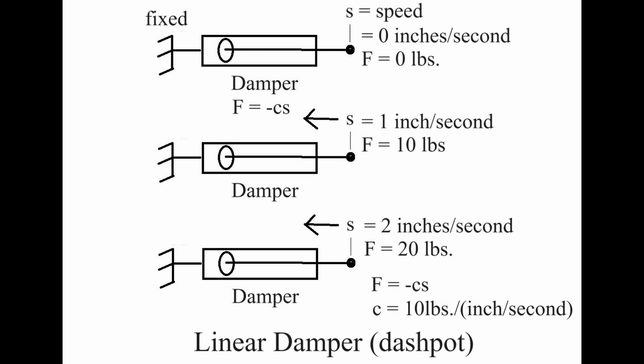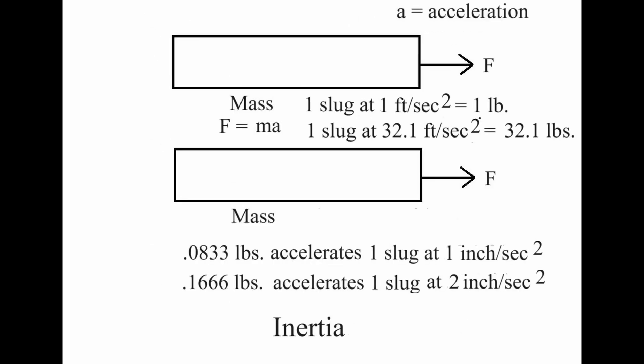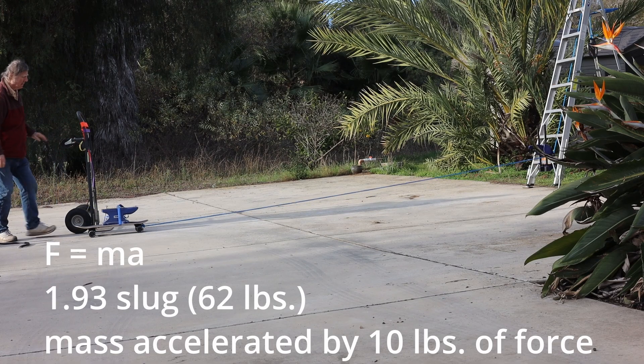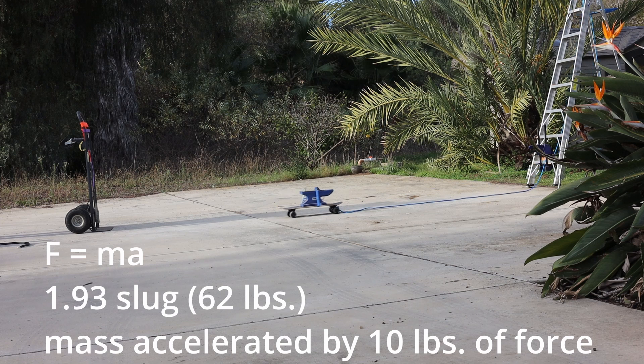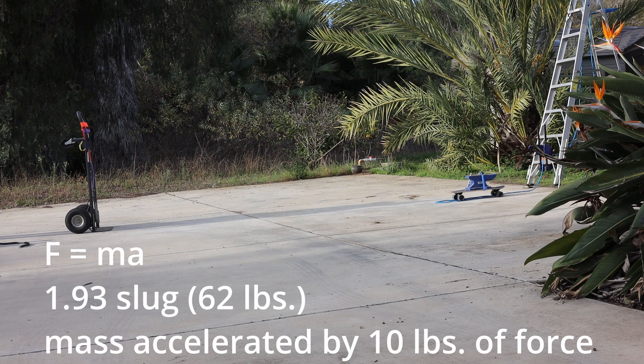One slug of mass accelerated at 1 foot per second requires a force of 1 pound. One slug of mass accelerated at 32.1 feet per second, the acceleration due to gravity, requires a force of 32.1 pounds. We will accelerate a mass of 1.93 slugs with a constant force of 10 pounds, or 7 feet anyway.